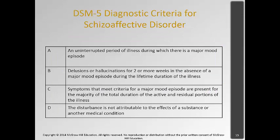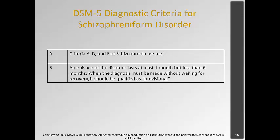The diagnostic criteria for schizoaffective disorder require an uninterrupted period of illness during which there is a major mood episode, and delusions or hallucinations for two weeks or more in the absence of a major mood episode. You can't have both depression and schizophrenia at the same time — you must have hallucinations or delusions for at least two weeks while not experiencing a mood disorder. The symptoms meet criteria for a major mood episode for the majority of the active and residual portion of the illness, and cannot be attributed to substance abuse or other medical condition.